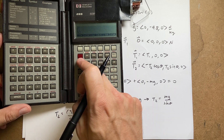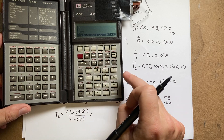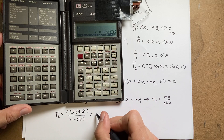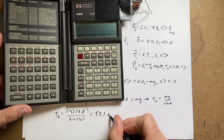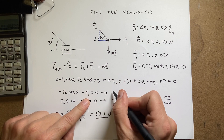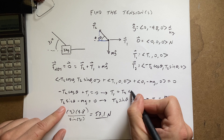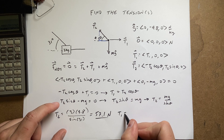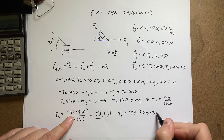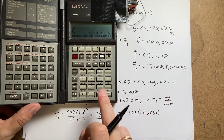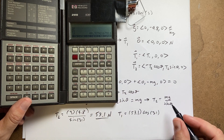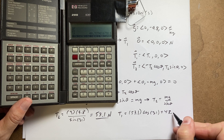Let's put that in the calculator: 3 enter, times 9.8, divided by sine of 31 — make sure your calculator is in degree mode — and I get 57.1 newtons. That's the magnitude of T2. Now I can solve for T1. From the x equation, T1 equals T2 cosine theta, so T1 equals 57.1 times cosine of 31, which gives 48.9 newtons.